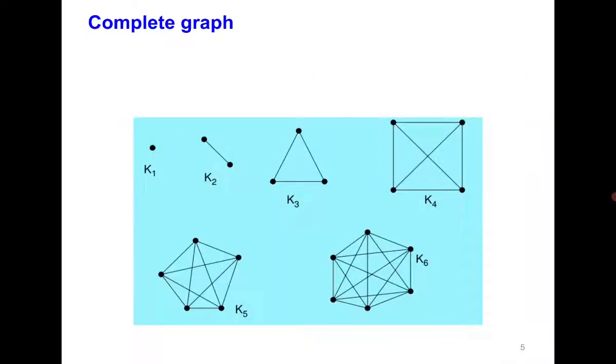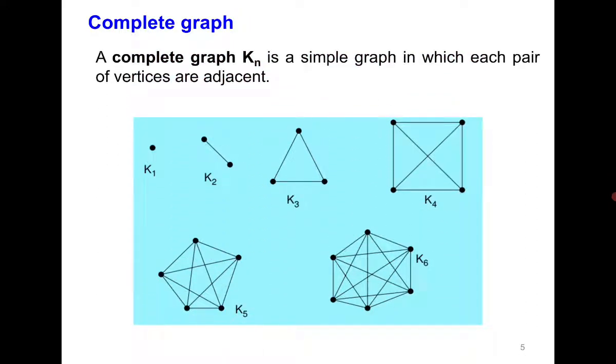Now the complete graph. Again, a simple graph where each vertex is adjacent to all other vertices. So you can see K1, K2, K3, K4, K5 and K6 here.